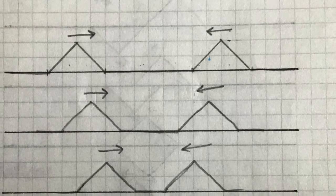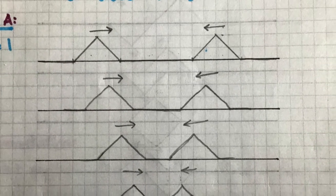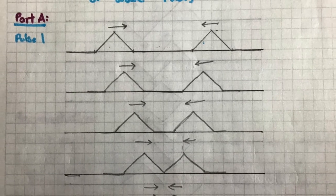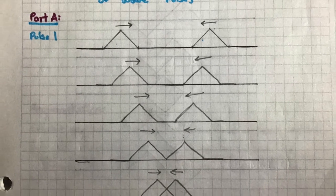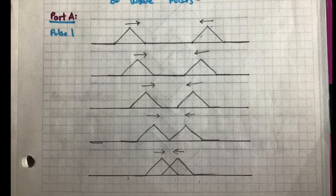So now we have three scenarios that I have solved. The first one are the two triangular wave pulses that are moving to each other on the same side. They're both on top of the line.